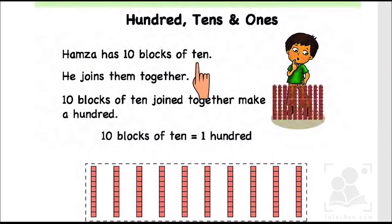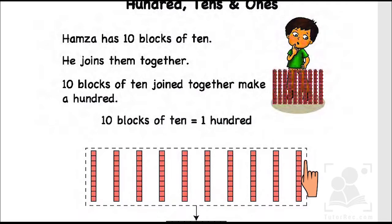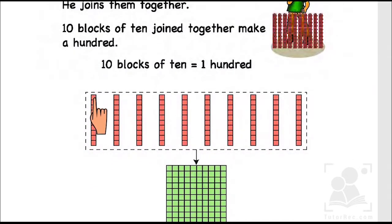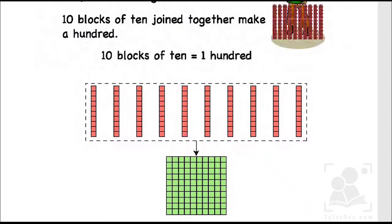Hamza has ten blocks of ten. He is Hamza and he has ten blocks of ten. One, two, three, four, five, six, seven, eight, nine, ten - he has ten blocks of ten. When he joins them together it becomes one hundred. Try to count them: one, two, three, four, five, six, seven, eight, nine and ten. These are ten blocks. When we join them together, ten times ten equals one hundred.